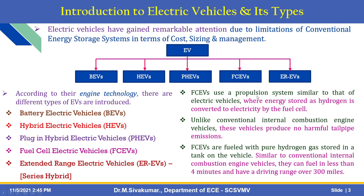In this video we are going to discuss fuel cell-based electric vehicles. A fuel cell electric vehicle uses a propulsion system similar to that of electric vehicles, where energy stored as hydrogen is converted to electricity by the fuel cell. Unlike conventional internal combustion engine vehicles, these vehicles produce no harmful tailpipe emissions. They are fueled with pure hydrogen gas stored in a tank on the vehicle, can refuel in less than 4 minutes, and have a driving range of over 300 miles.